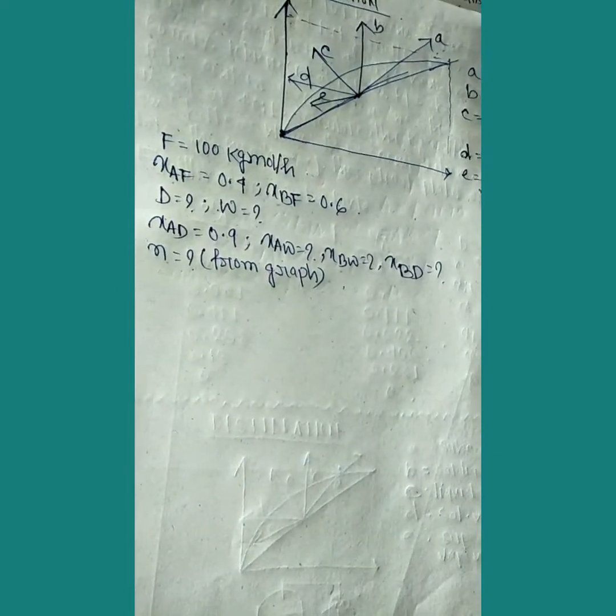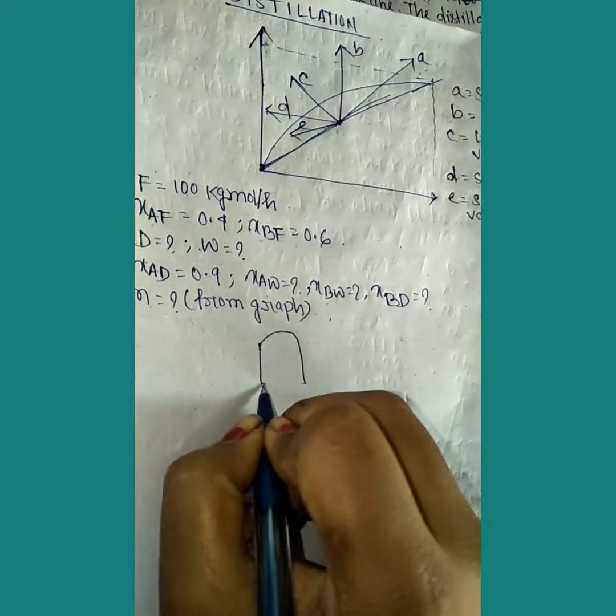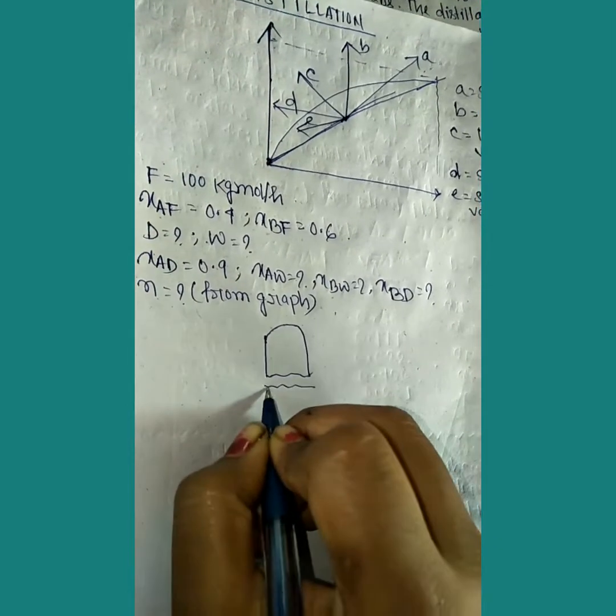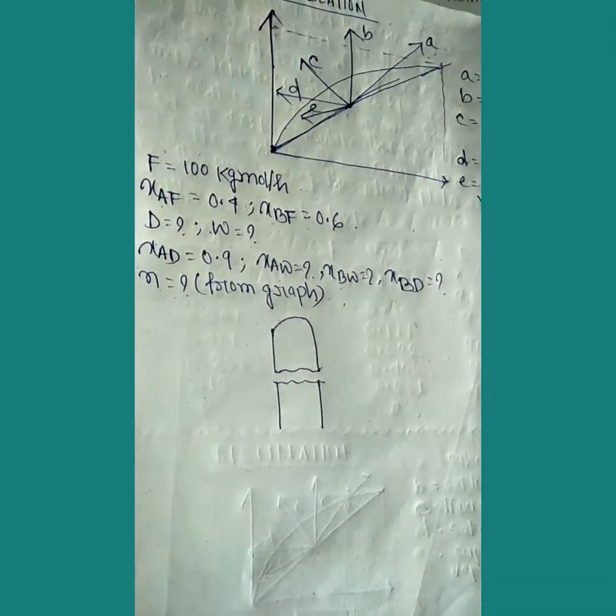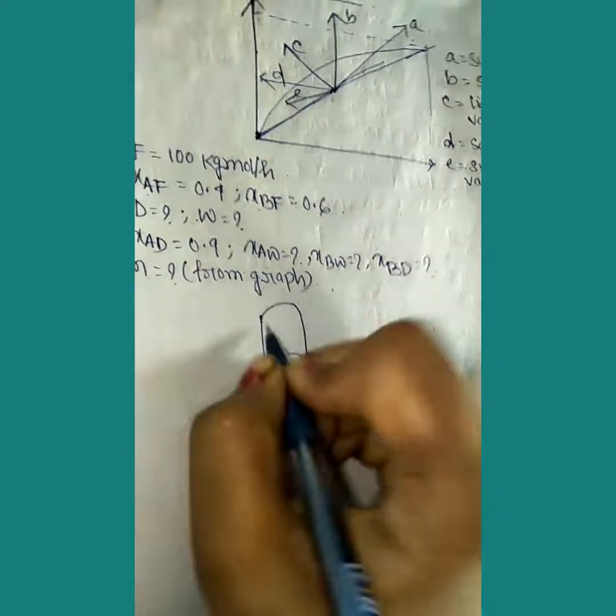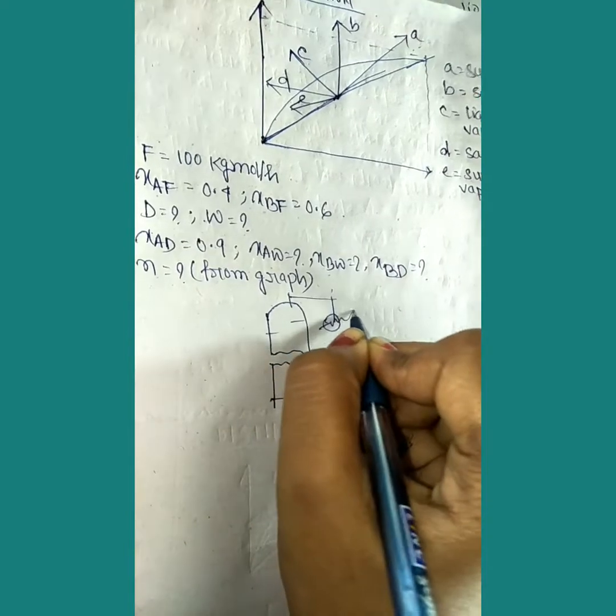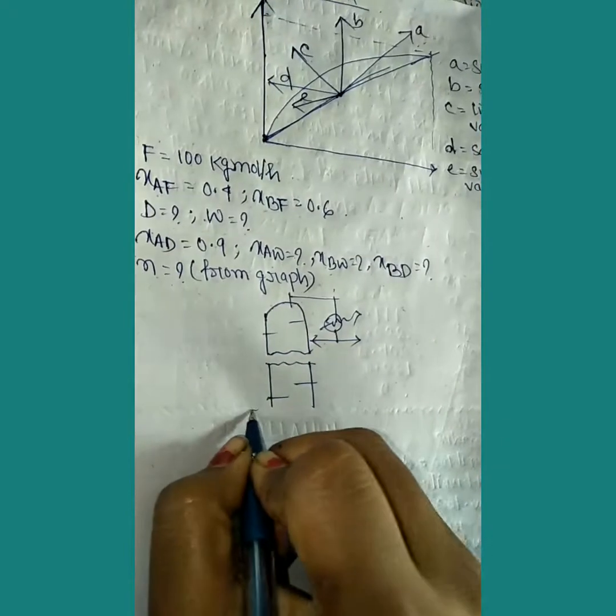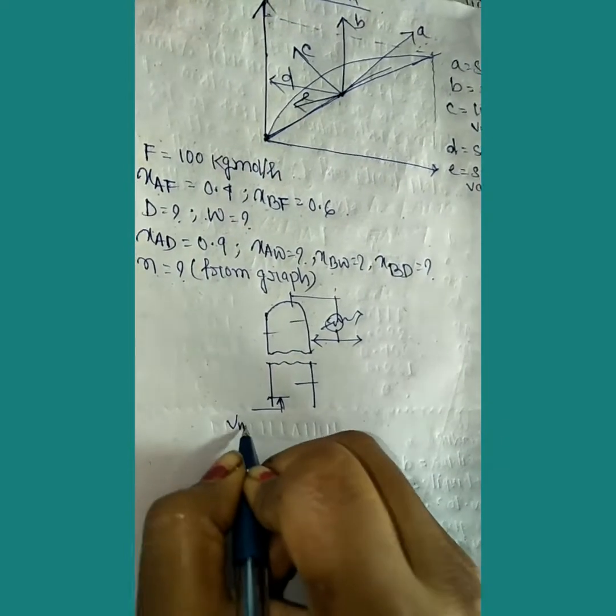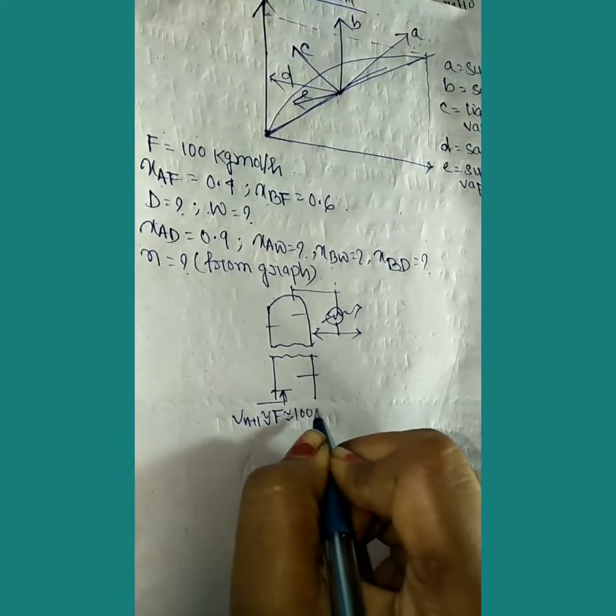Now we'll draw the enriching tower section.